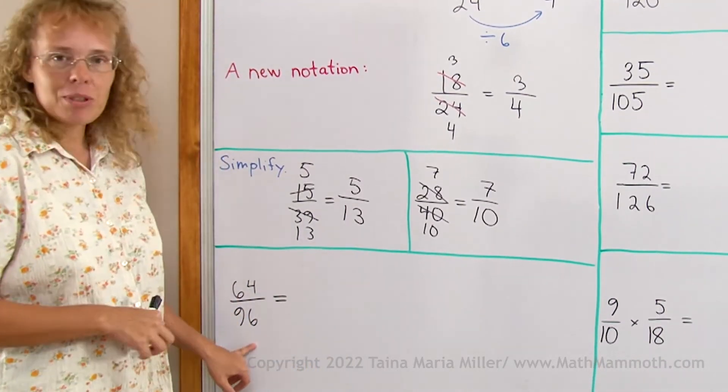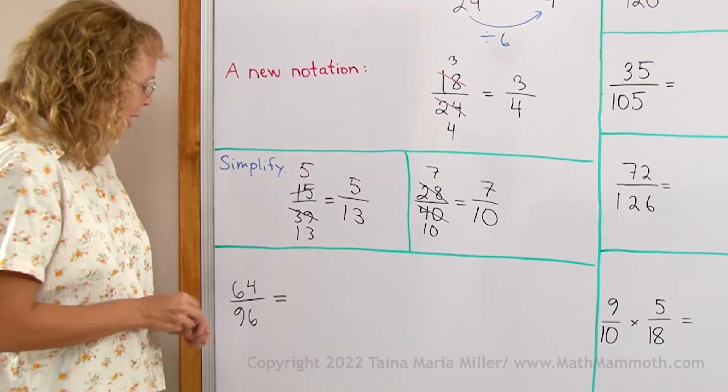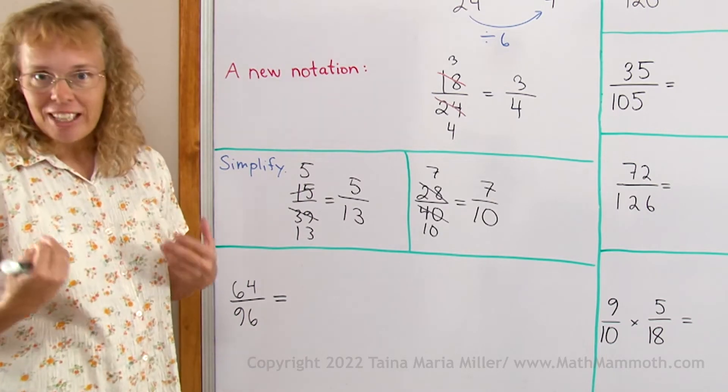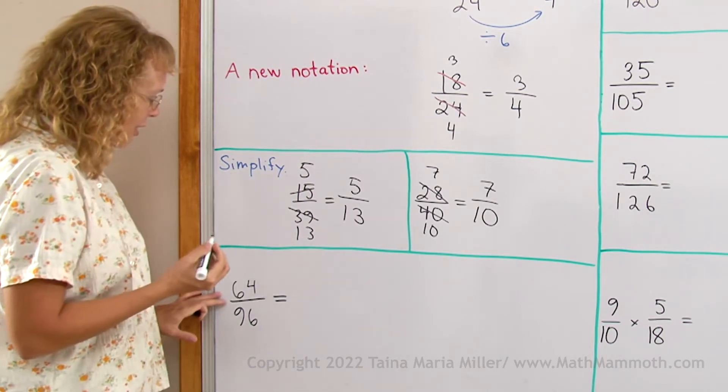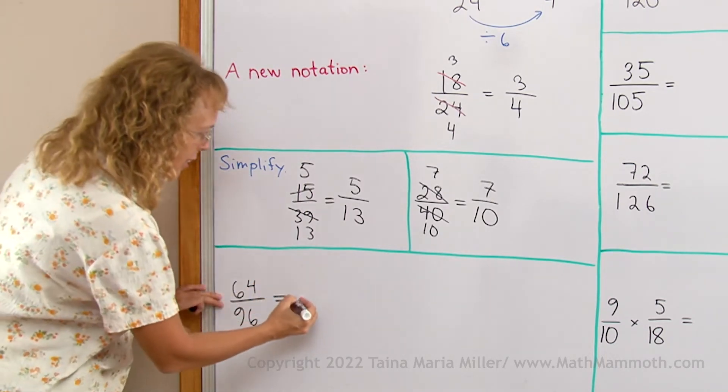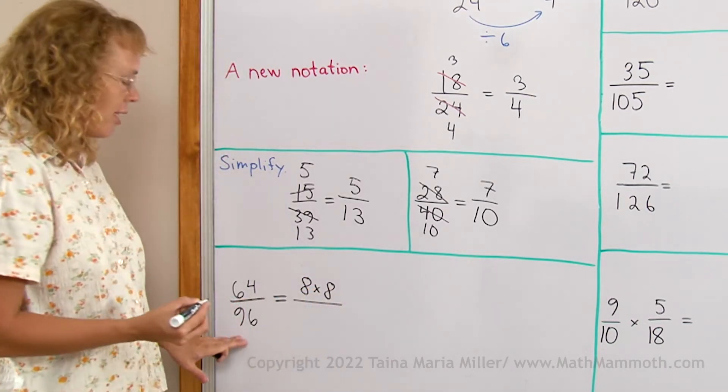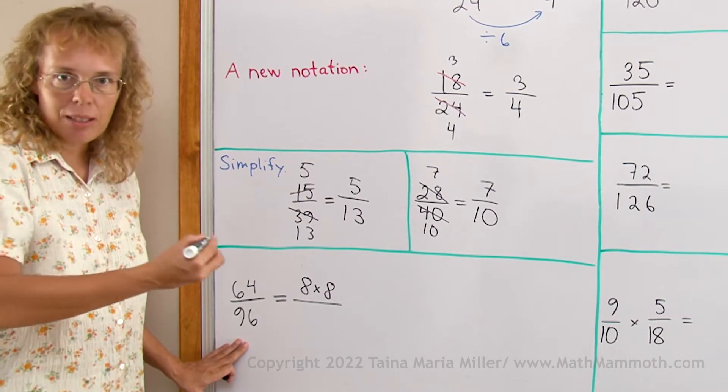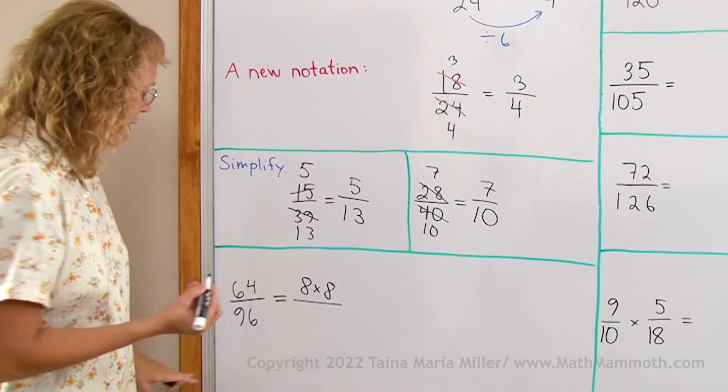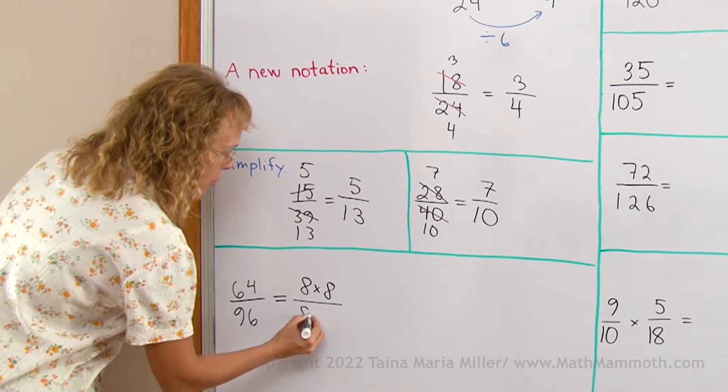Let's look at this one. We want to simplify this fraction, and now I'm going to use factoring. I'm going to at first write 64 as 8 times 8. And I'm going to write 96 as something times something. You can choose many different ways, but I'm going to write it as 8 times 12.